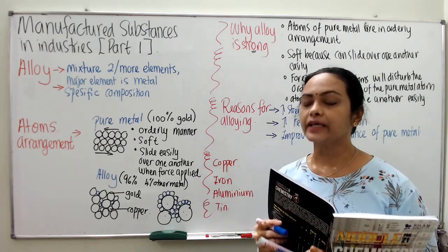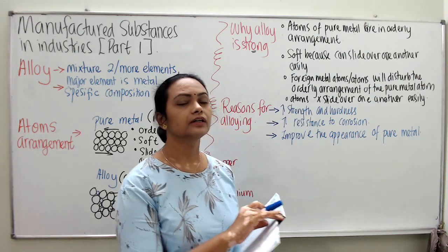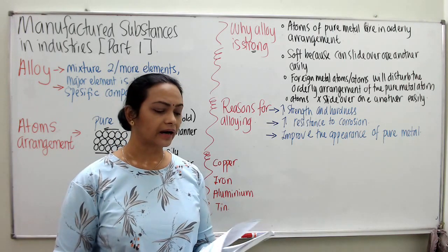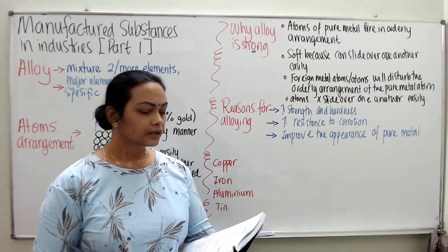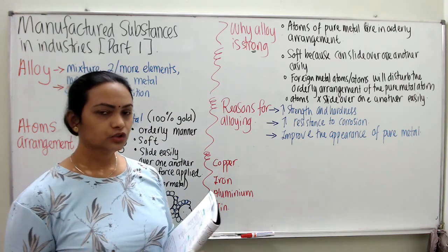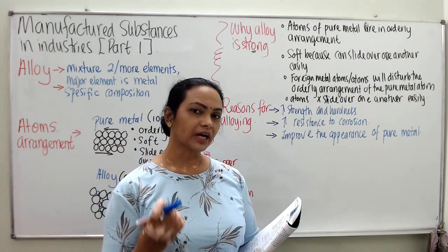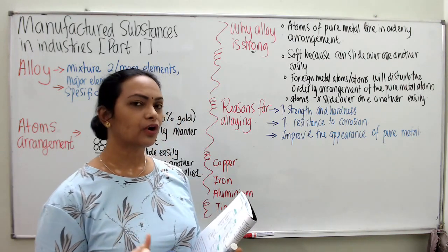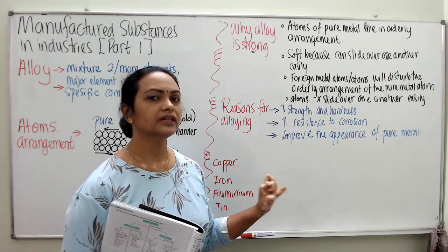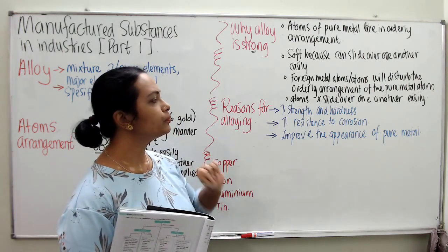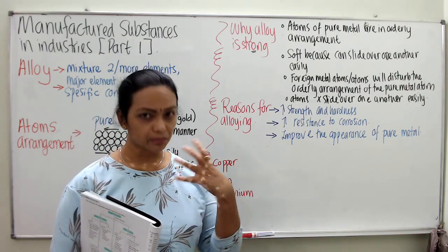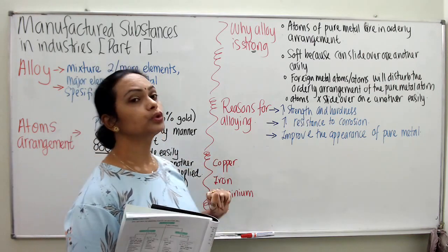For instance, zinc is just a dull grey metal — not very shiny. But when you add copper, it is called brass. The zinc will become shiny and harder, because copper, which has a nice colour, will give a shiny texture to the metal. So that is the reason why alloying can improve the appearance of pure metal — it becomes shinier or more presentable.